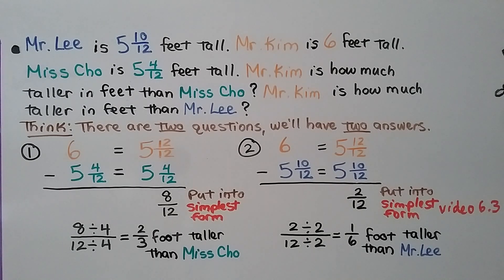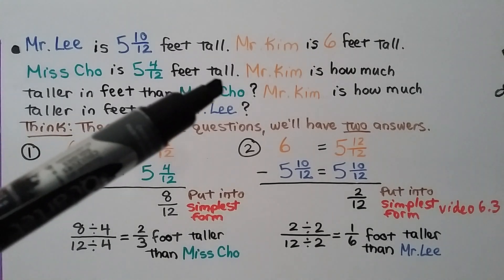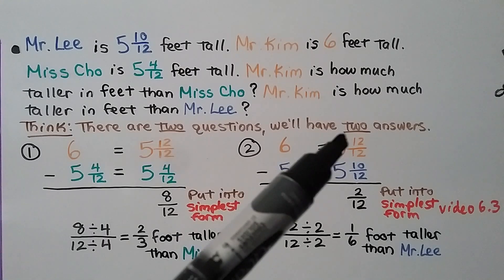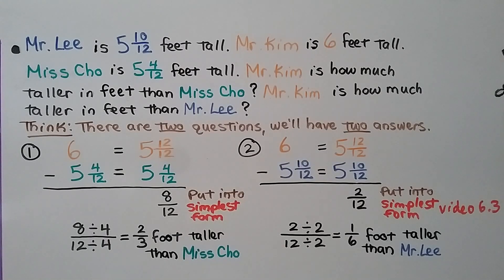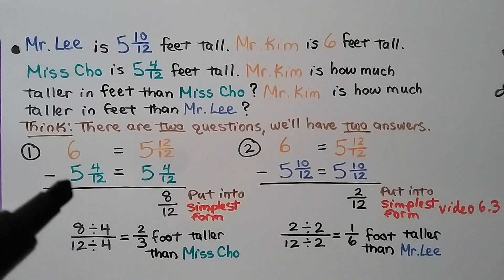Mr. Lee is 5 and 10 twelfths feet tall. Mr. Kim is 6 feet tall. Ms. Cho is 5 and 4 twelfths feet tall. Mr. Kim is how much taller in feet than Ms. Cho? Mr. Kim is how much taller in feet than Mr. Lee? There are 2 questions, so we're going to have 2 answers. For the first question, we need to compare Mr. Kim's height to Ms. Cho's height.